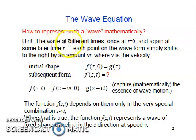So, the wave at two different times, at t equals 0 and again at some later time t. At each point, the waveform simply shifts to the right by an amount v times t, where v is the velocity. For initial shape at propagation direction z at time equals 0, suppose that function is g(z).